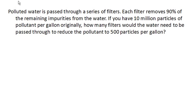So polluted water is passed through a series of filters. Each filter removes 90% of the remaining impurities from the water. So if we have 10 million particles of pollutant per gallon originally, how many filters would the water need to be passed through to reduce the pollutant to 500 particles per gallon?